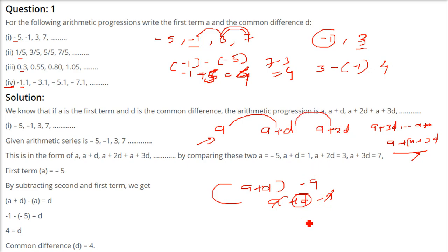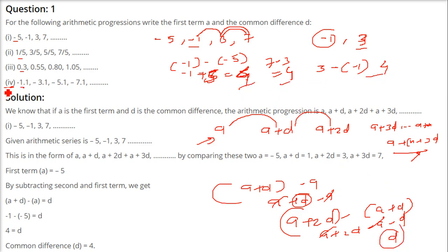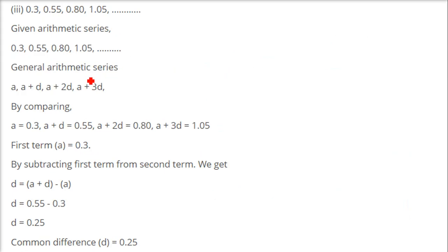Similarly, (A+2D) minus (A+D) gives A+2D-A-D, which equals D. So every time the common difference comes out as D — like 4, 4, 4 in the earlier example.